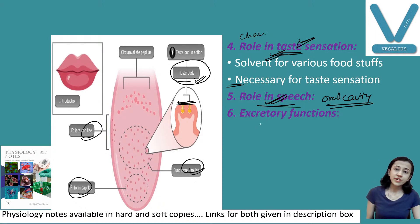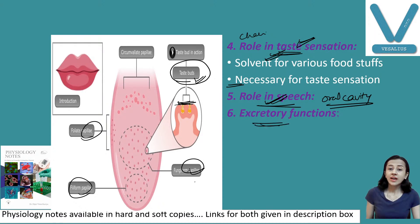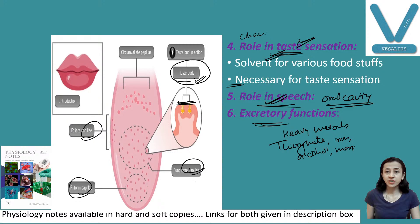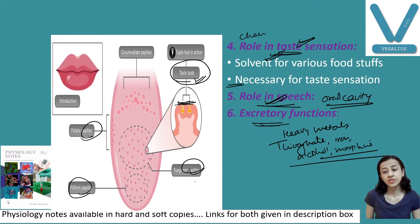Another important function is the excretory function. Saliva excretes certain heavy metals, thiocyanate, iron, alcohol, and morphine — a drug — which can also be excreted in saliva.